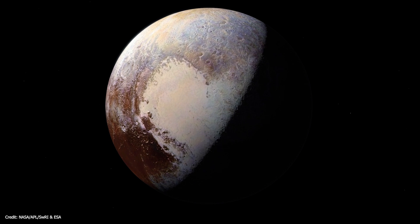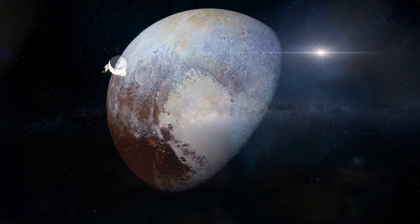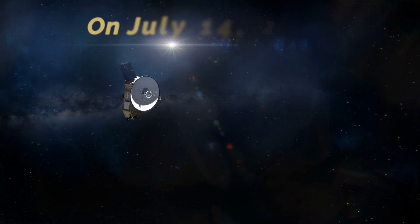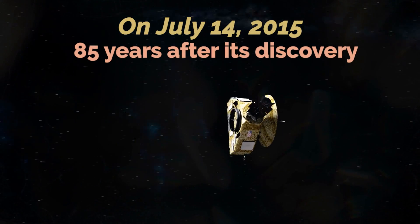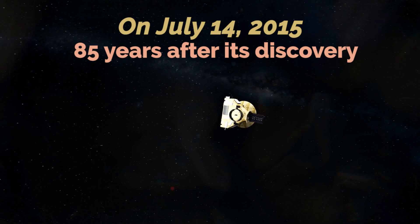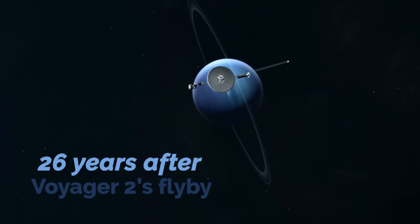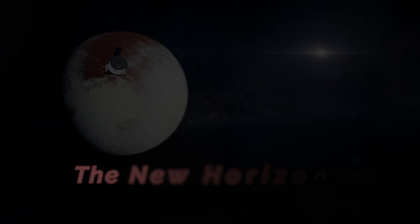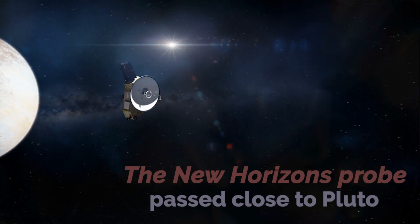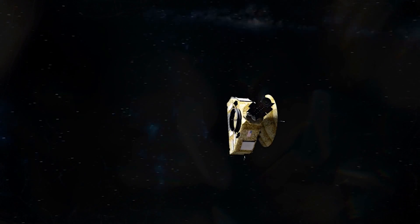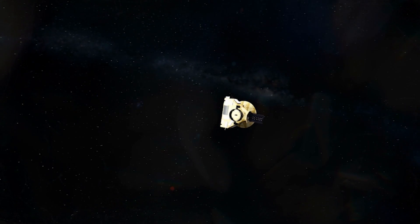So distant and isolated that it would be visited by an interplanetary probe only 85 years after its discovery, on July 14, 2015, the last of the planets. In fact, 26 years after Voyager 2's flyby of Neptune, the US New Horizons probe passed so close to Pluto that it could finally show its face as a real planet, a frontier planet.